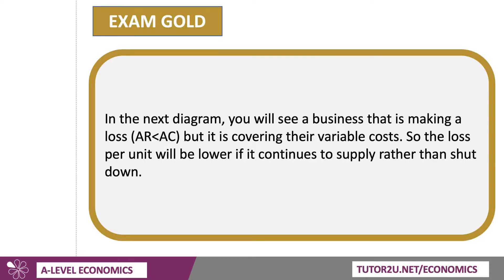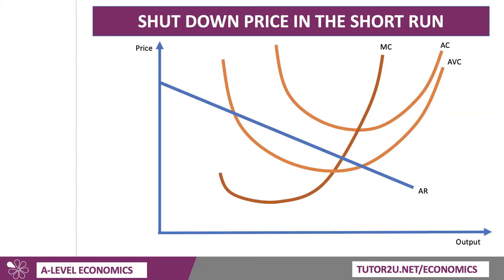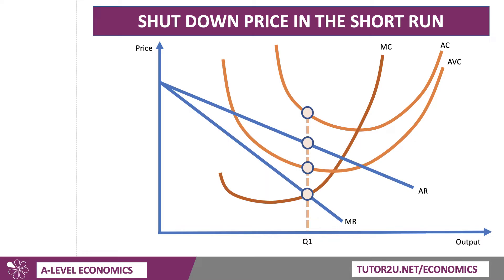In the next diagram you'll see a business that's making a loss, because the revenue per unit is less than the cost per unit, but it is at least covering their variable costs. Here's the average revenue curve of the firm, and let's put in the marginal revenue — a downward sloping demand curve. Assuming a profit-maximising firm, that's where MR meets MC. That's the output Q1, and that's the price charged, P1. You can see that price is lower than the cost per unit AC1.